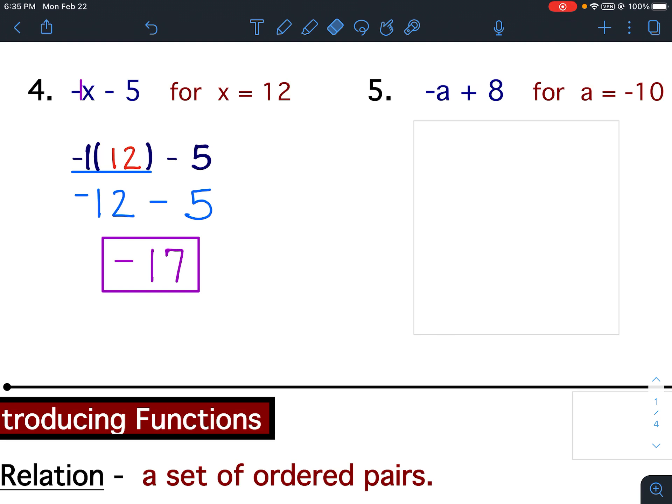Number 5. Again, you would put a negative 1 in front of the a. And then I would substitute in negative 10. The opposite of negative 10 is positive 10. Positive 10 plus 8 is 18.